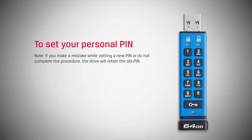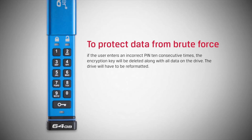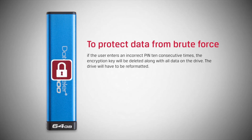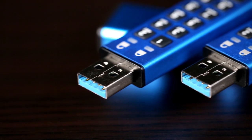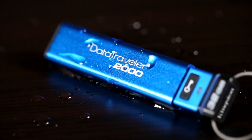If you make a mistake while setting a new pin or don't complete the procedure, don't worry — the drive will retain the old pin. To protect data from brute force, if the user enters an incorrect pin 10 consecutive times, the encryption key will be deleted along with all the data on the drive, and the drive will have to be reformatted. Learn more about the Ultra Secure DataTraveler 2000.